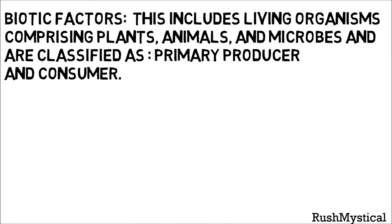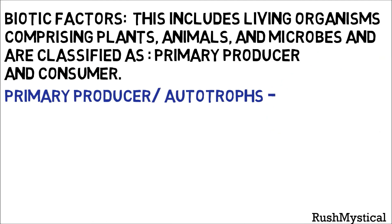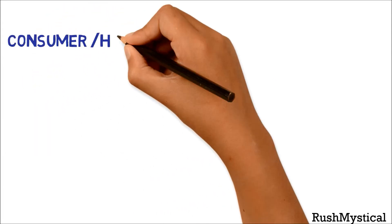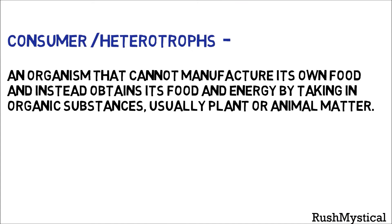Biotic factors include living organisms — plants, animals, and microbes — and are classified as producers and consumers. Primary producers, or autotrophs, are organisms that can produce their own food using light, water, carbon dioxide, and other chemicals. Examples include terrestrial plants and, for aquatic ecosystems, various species of microscopic algae. Consumers, or heterotrophs, are organisms that cannot manufacture their own food and instead obtain energy from plants and animal matter.